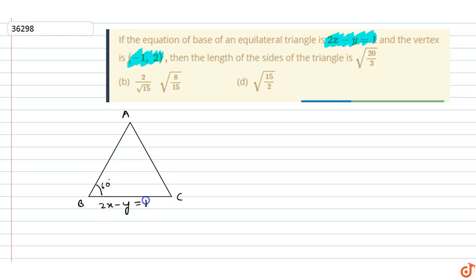BC is 2x minus y equals 1. Now we substitute this point: 2 times (-1) minus 2 equals -4. So this point is our vertex A, which is (-1, 2).